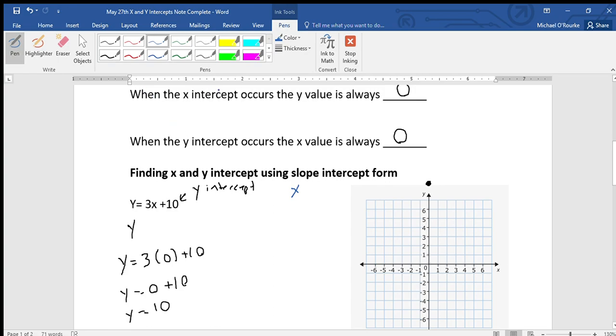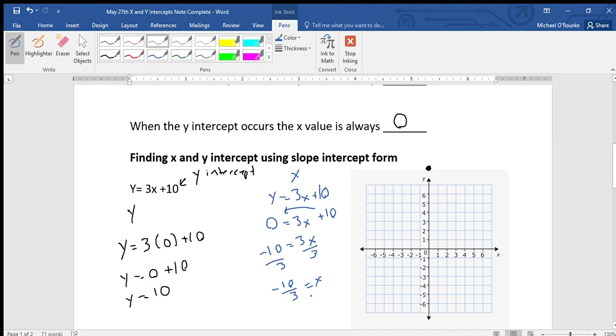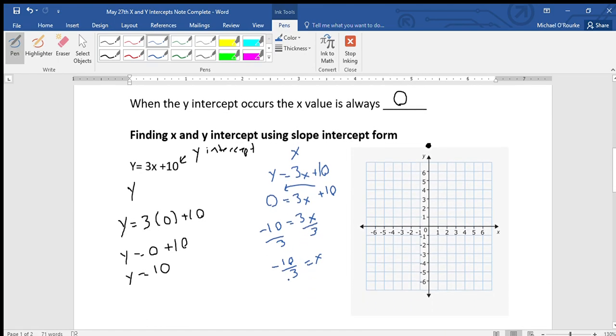When the x-intercept occurs, the y value is zero. So if we have y equals 3x plus 10, let's make the y value zero: 0 equals 3x plus 10. Let's solve for it. Move it over: negative 10 equals 3x. Divide by my coefficient: negative 10 over 3 equals x. That's an ugly number, but approximately negative three and one-third equals x.